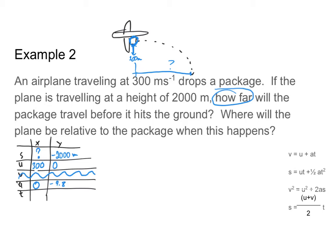Step one is going to be to figure out time in the y direction, because I have three pieces of information in the y direction and only two in the x direction — and in order to find anything I need three pieces of information. I need to find time because that is the piece of information that is the same in both directions, since my object hits the ground at one moment in time. I'll find time in the y direction, use that to fill in my x table, and then figure out displacement in x.